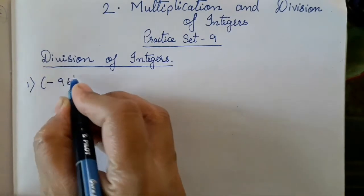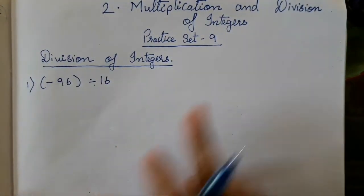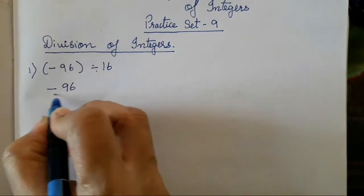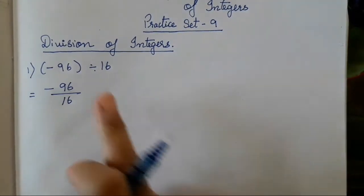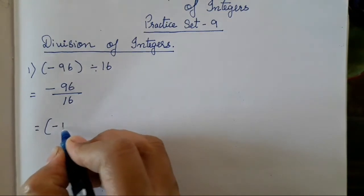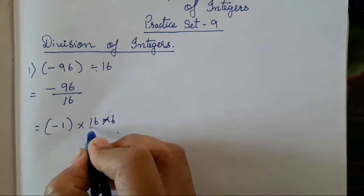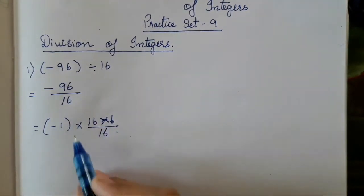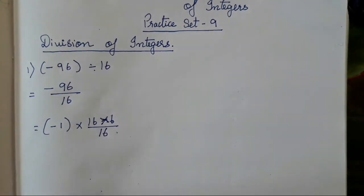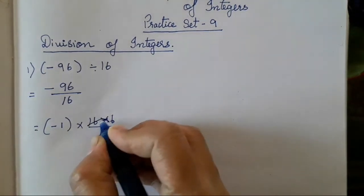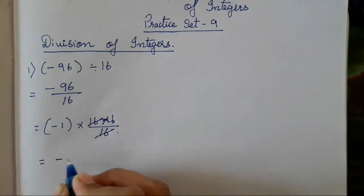The first question is minus 96 divided with 16. So how are you going to write it in division form? This is going to be 96 and 16 will come over here — it can be written in this form also. The simplest way is to directly find the answer using the 16th table. That is minus 1 into 16 into 6, and 16. So 16 sixes are minus 96 into 1. The answer is going to be minus 96, and 16 as is. After reduction, minus 1 into 6 — that is minus 6.